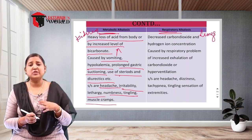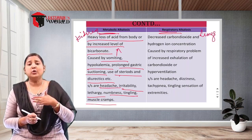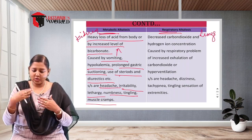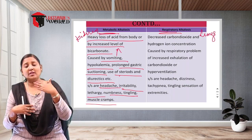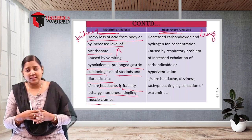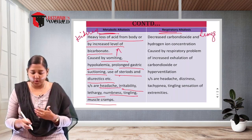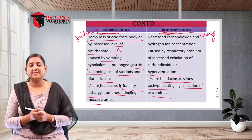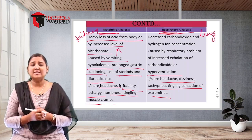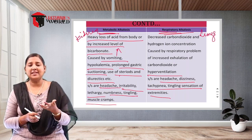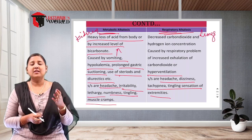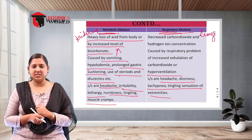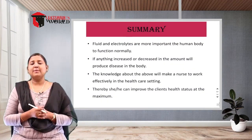Respiratory alkalosis is caused by decreased CO2 in the blood due to hyperventilation — the lungs exhale too much CO2. This decreases carbonic acid and hydrogen levels while bicarbonate levels increase, raising blood pH. Symptoms include headache, dizziness, tachypnea, and tingling sensation of the extremities. Management involves treating the underlying cause; if hyperventilation is occurring, normalize the breathing pattern and reduce excess oxygen delivery.